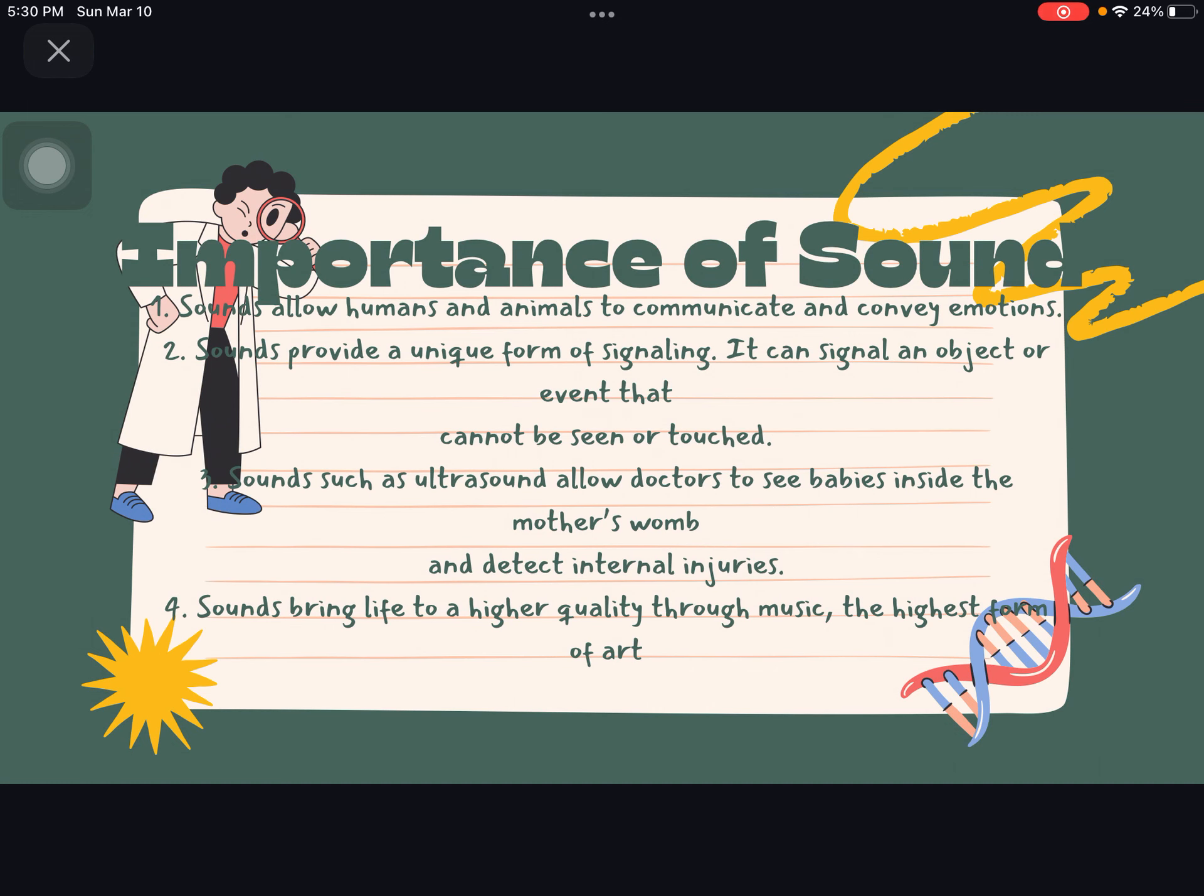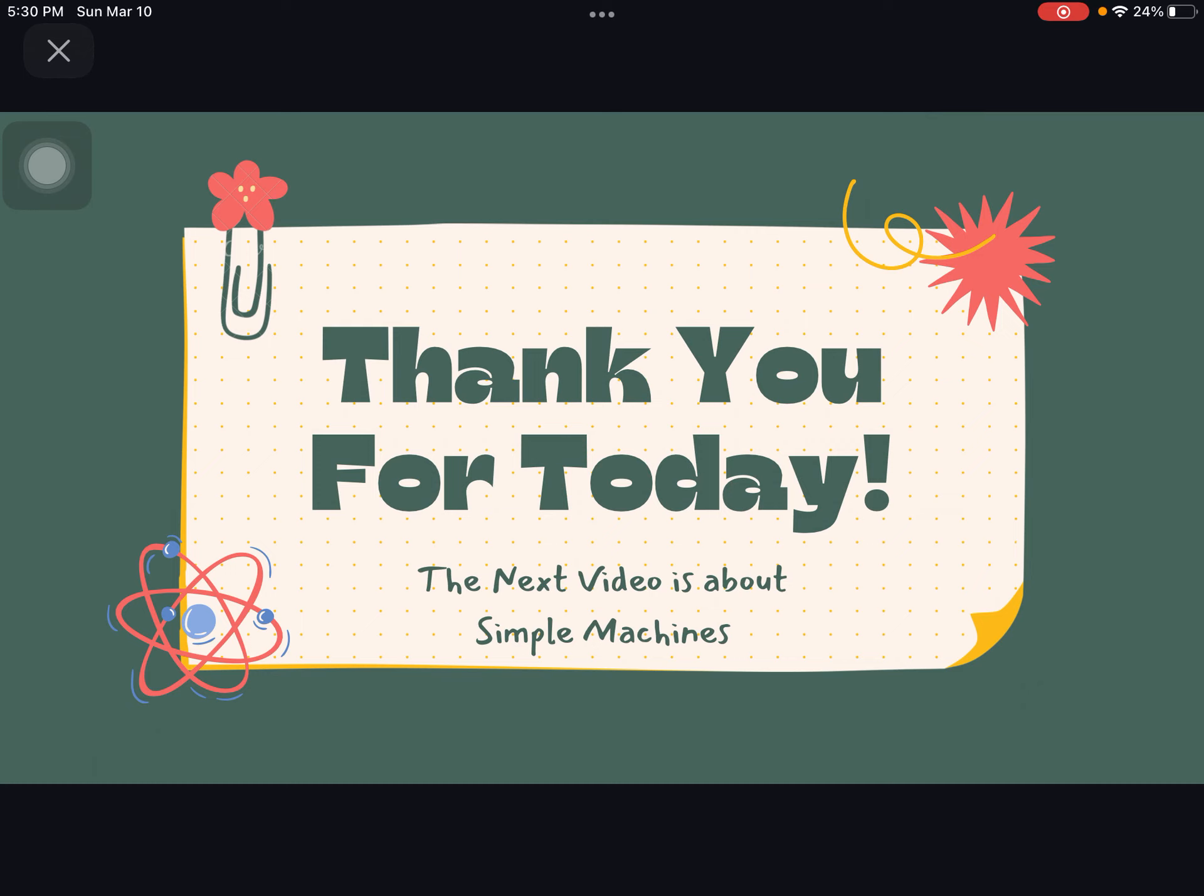Importance of sound. Sound allows humans and animals to communicate and convey emotions. Sounds provide a unique form of signaling. It can signal an object or event that cannot be seen or touched. Sounds such as ultrasound allow doctors to see babies in the mother's womb and detect internal injuries. Sound brings life to a higher quality through music, the highest form of art.